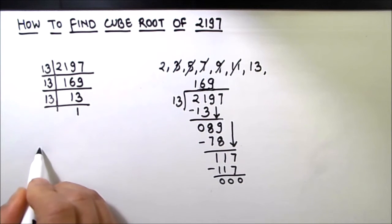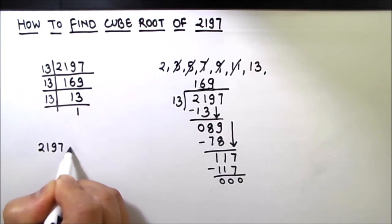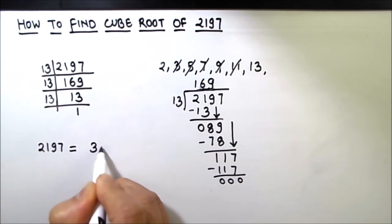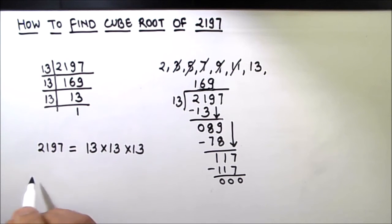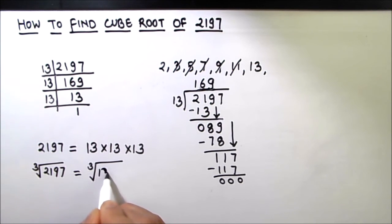So let's write 2197 as the product of its factors, which is 13 times 13 times 13. And then by taking the cube root on both sides, the cube root of 2197 is 13.